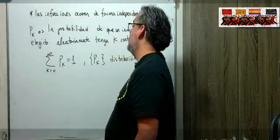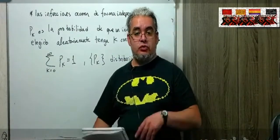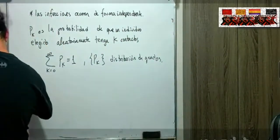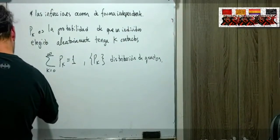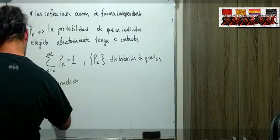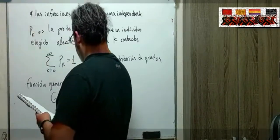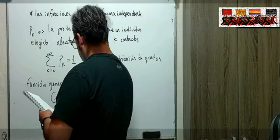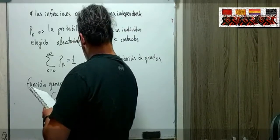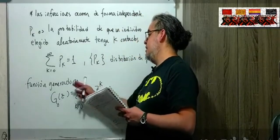Lo que se hace cuando se plantea la construcción artificial de una red de contactos es lo que se llama una función generadora. Vamos a llamarle G0(z), y esta no va a ser más que la suma de P_k por z^k. Es la serie de potencias asociada a la distribución de grados.